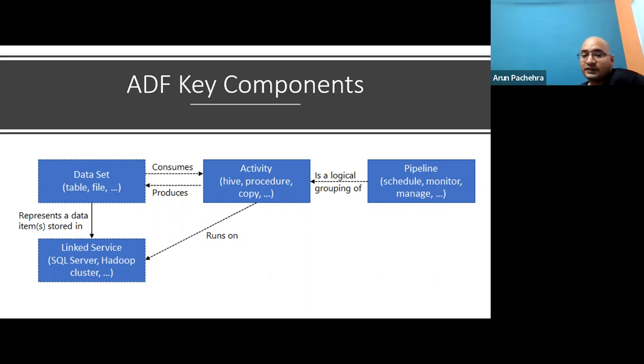But to operate all these activities, all this pipeline and everything, we need something like a runtime. So in data factory, an activity defines the action to be performed. A linked service defines a target data store or a compute service, and an integration runtime provides the bridge between the activity and the linked services. It's referenced by the linked service or activity and provides the compute environment where the activity either runs on or gets dispatched from. This way, the activity can be performed in the region closest possible to the target data store or compute service in the most performant way while meeting security and compliance needs. You see how all the components are hooking up together. It's a wonderful example of orchestration. That's how you're orchestrating the entire pipeline with these activities in place.